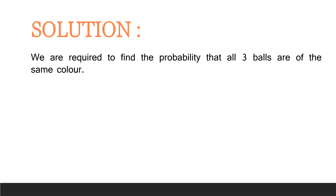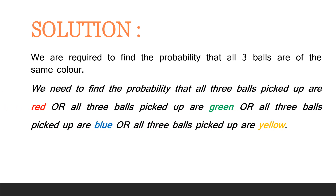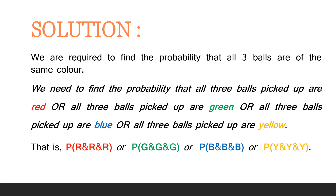We are required to find the probability that all 3 balls are of the same color — that is, the probability that all 3 balls picked are red, or all 3 are green, or all 3 are yellow, or all 3 are blue. This is: P(3 reds) or P(3 greens) or P(3 blues) or P(3 yellows).